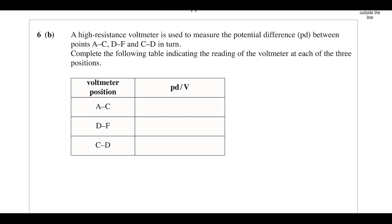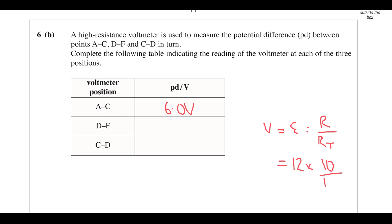A high-resistance voltmeter measures potential difference between A and C, D and F, and C and D. Between A and C: those two resistors are identical so the potential difference is divided equally — each gets 6, giving 6.0 volts. Between D and F, using the potential divider equation: EMF times R over total — that's 12 times 10/15 — 10/15 is two thirds, two thirds times 12 gives 8 volts across the 10 kΩ, leaving 4 volts across the thermistor.